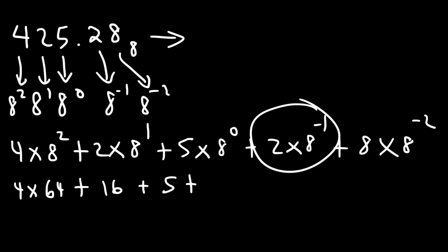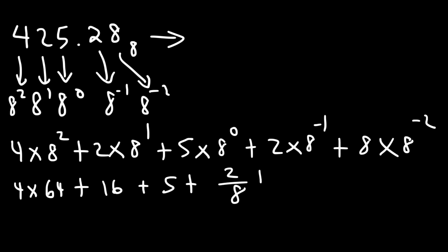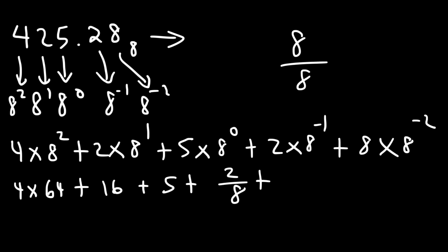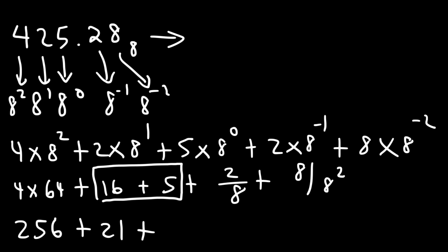Now what about 2 times 8 to the minus 1? 8 to the negative 1 is the same as 1 over 8, so this expression becomes 2 times 1 over 8, or 2 divided by 8. For the last expression, 8 to the negative 2 is 1 over 8 squared, so we have 8 divided by 8 squared. 4 times 64 is 256. 16 plus 5 is 21. 2 over 8 is 0.25, and 8 divided by 64 is 0.125.